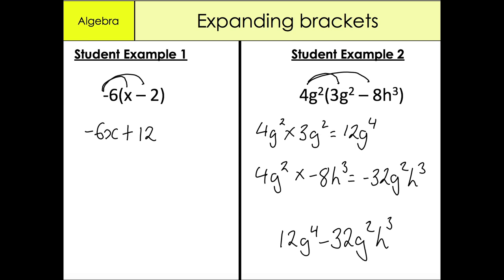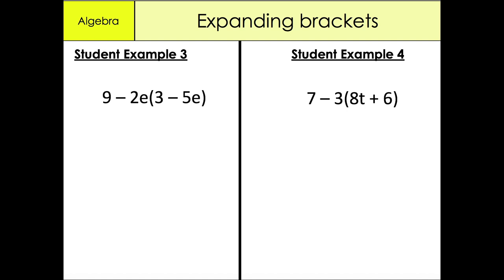Moving on to the next example: 9 - 2e(3 - 5e). I put the 9 aside, then expand the bracket. Minus 2e multiplied by 3 gives minus 6e. Minus 2e multiplied by minus 5e: negative times negative gives a positive answer, so that's plus 10e². So we have 9 - 6e + 10e².